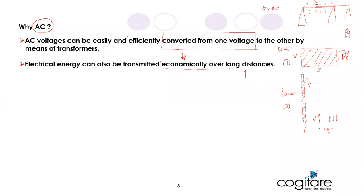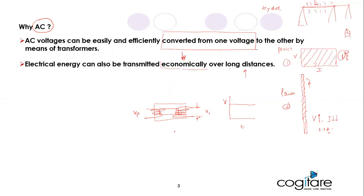This is only possible because you can convert the voltage using transformers — stepping it up. And you can do that only with AC voltage. With DC voltage, which does not change with time, you cannot manipulate it through a transformer. If you put DC on the primary, can you increase or decrease the secondary voltage? No.